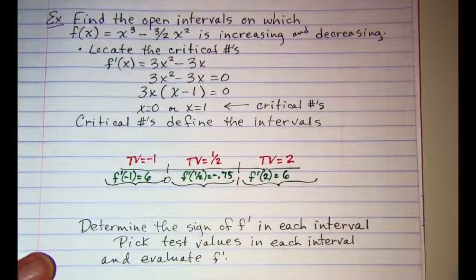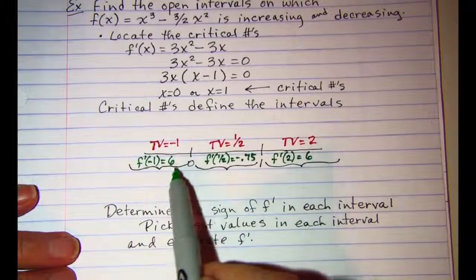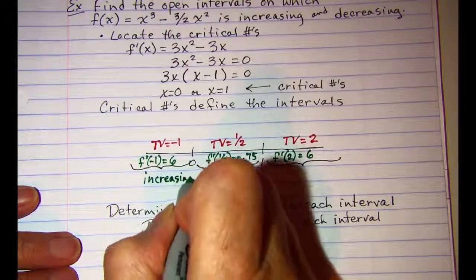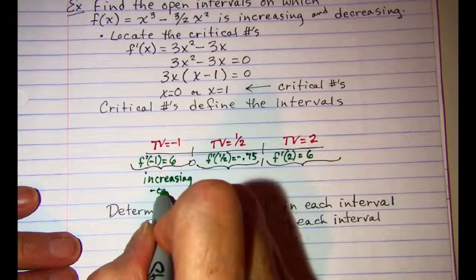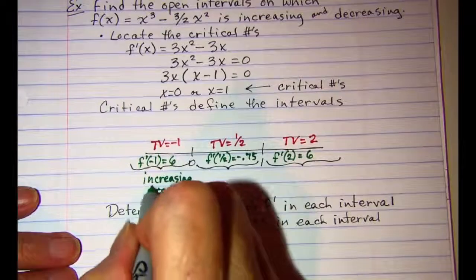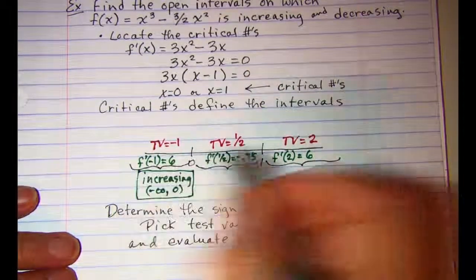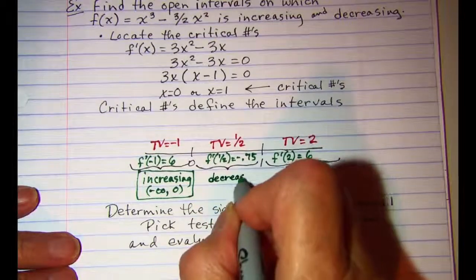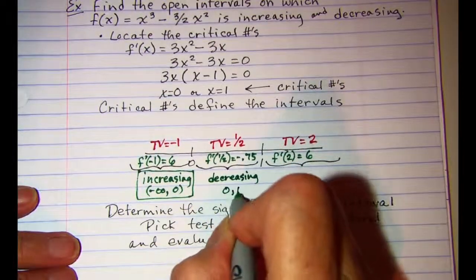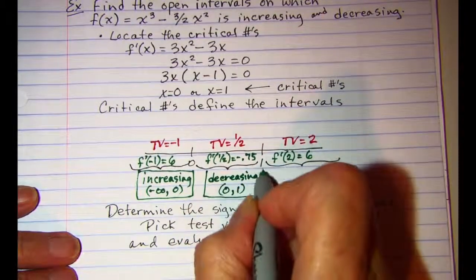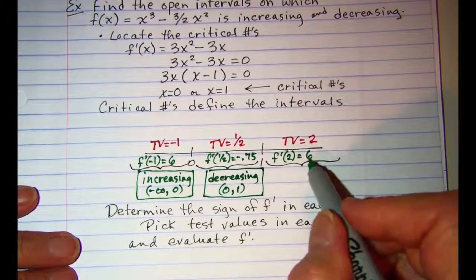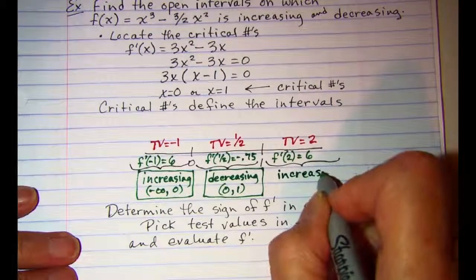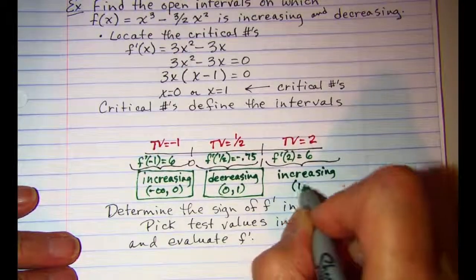So the intervals where the derivative is positive will be increasing from negative infinity to zero. This one's negative, so decreasing from zero to one. And this interval, the test value turned out positive, so increasing from one to infinity.